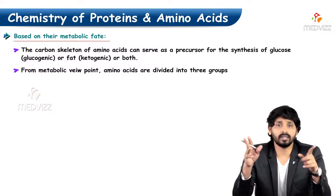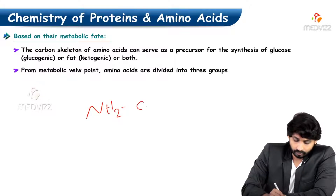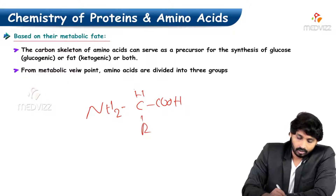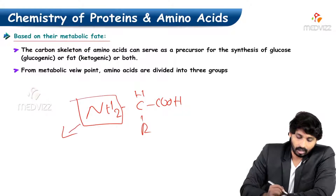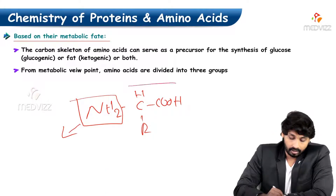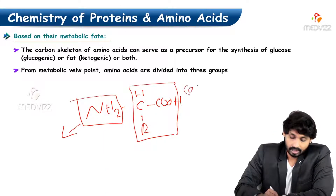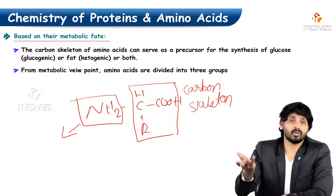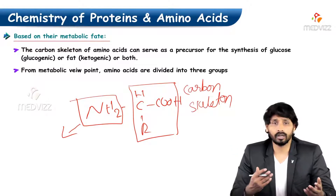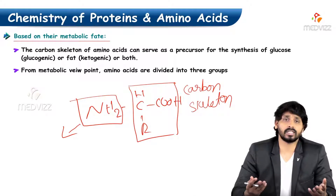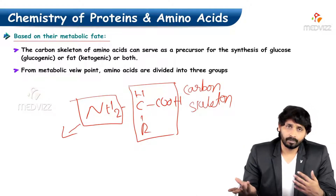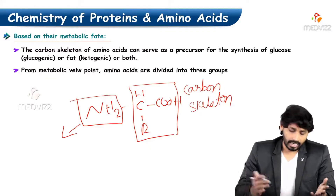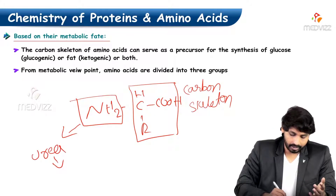In an amino acid we have two groups: NH2, CH, COOH, and R. When you remove the amino group, what remains is the carbon skeleton. The amino group is required for formation of other important functional substances in the body, or once it has performed its function, it will be converted into urea and excreted.